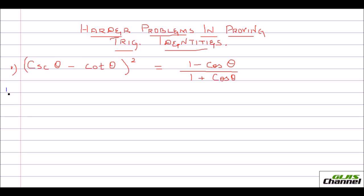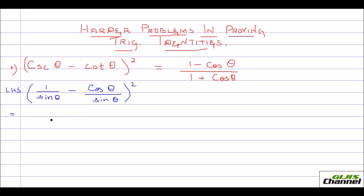Let me start with the left hand side. Since on the right I have cos theta, I would like to put cosecant theta and cot theta in terms of sine and cos. So cosecant theta is 1 over sine theta — the reciprocal identity — and 1 over sine theta minus cot theta is cos theta over sine theta. Now let me square the whole thing. Since the denominators are the same, I put one common denominator and write the numerator as 1 minus cos theta, the whole squared.